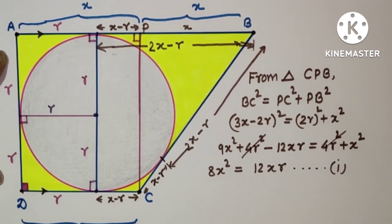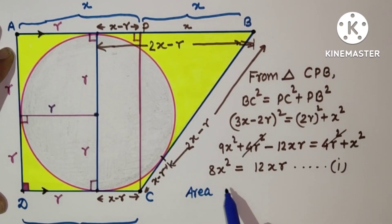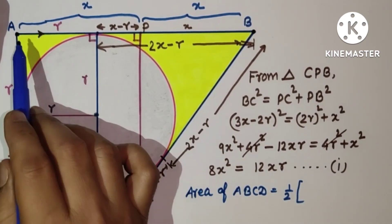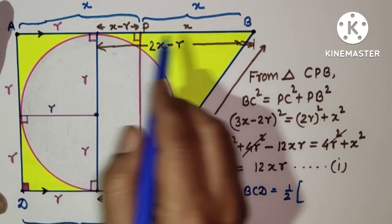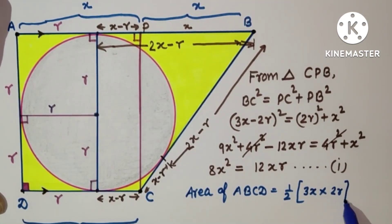Second information we have, area of this quadrilateral, area of trapezium will be half sum of the parallel sides. This is 2X, this is X, so sum of the parallel sides will be 3X, into height between them, so 2R. So this 2 and this 2 will get cut, so that is given as 18. So 3XR is 18, which means XR is 6. So this is result number 2.